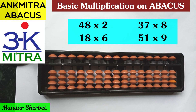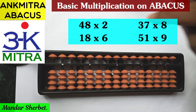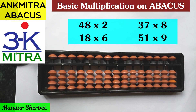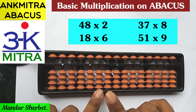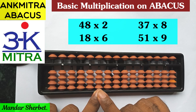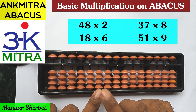Let's start with the first example: 48 multiplied by 2. The first thing we should know is from which rod to start. For a two-digit number multiplied by one-digit multiplication, the total number of rods that will be in use will be 3 — two digits here, one digit there, total rods in use will be 3. We'll start from the third rod. This middle white dot is our first rod, the units place rod, so the first, second, and third rod — this is where we'll start all two-digit multiplied by one-digit multiplication sums.